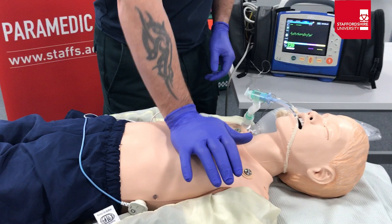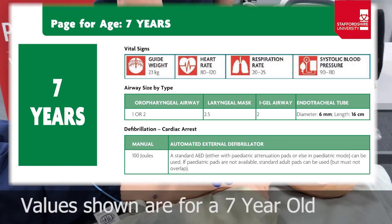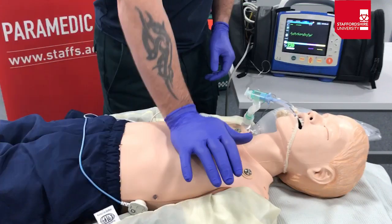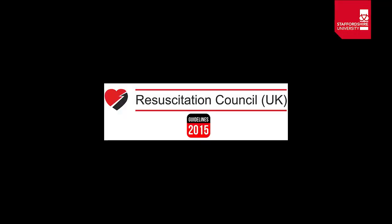You can then start to look at reversible causes — treatments are very similar to the adult ALS scenario, with variations in quantities of fluid or glucose depending on the reversible cause being treated. Familiarise yourself with the page-per-age pages of JR Calc for appropriate dosages, and make sure you know where the cardiac arrest sections are as they're not always immediately obvious. Your next port of call should be to look at the full guidelines on the Resuscitation Council website and JR Calc's algorithms on the subject.